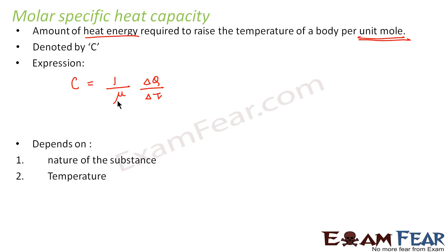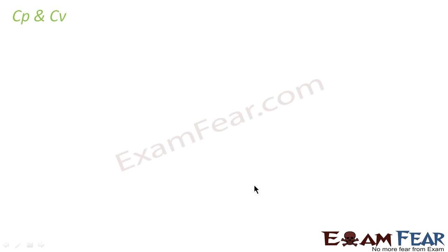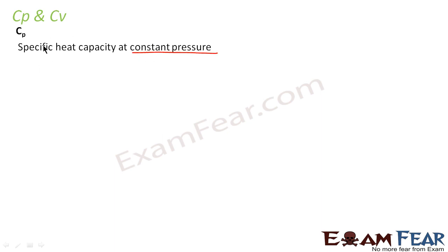Molar specific heat capacity depends on nature of the substance, temperature, and conditions under which the heat is supplied. The unit for this would be joule per mole per kelvin — the unit is the same structure as before, just that instead of mass you have the unit for number of moles. Now let us see what Cp and Cv are. C is molar specific heat capacity. When I say Cp I mean molar specific heat capacity at constant pressure, and Cv is nothing but specific heat capacity at constant volume.